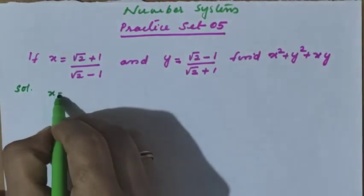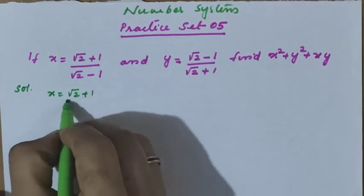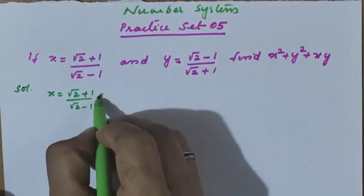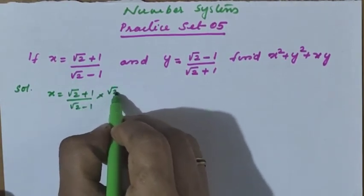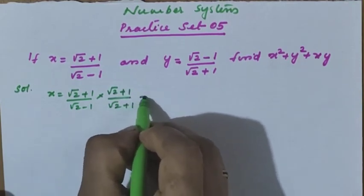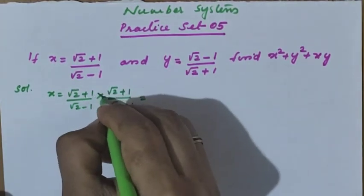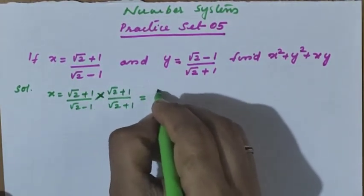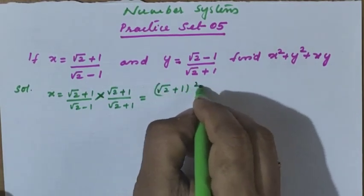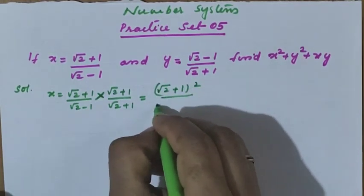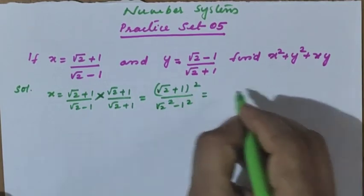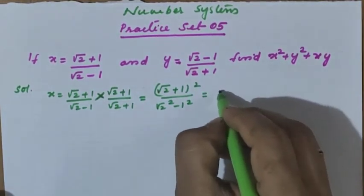x equals root 2 plus 1 divided by root 2 minus 1. We multiply and divide by root 2 plus 1. So the numerator root 2 plus 1 is repeated, giving root 2 plus 1 whole square divided by root 2 squared minus 1 squared. Now it is in the a plus b whole square form.